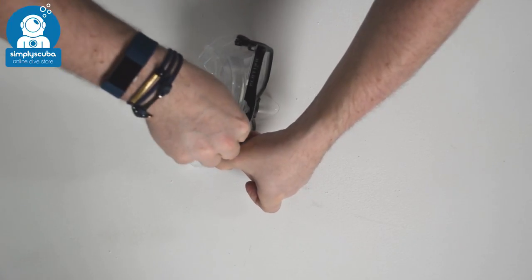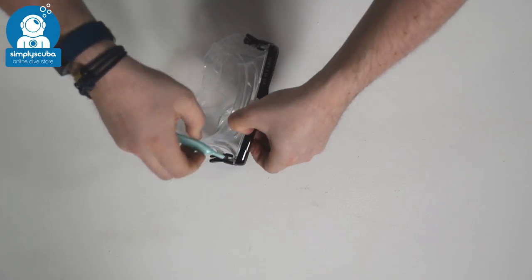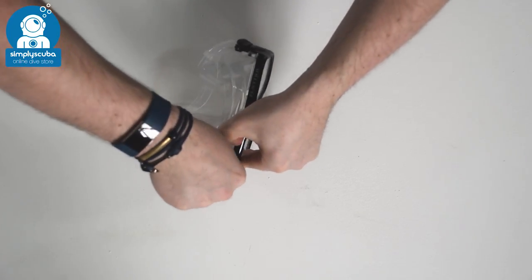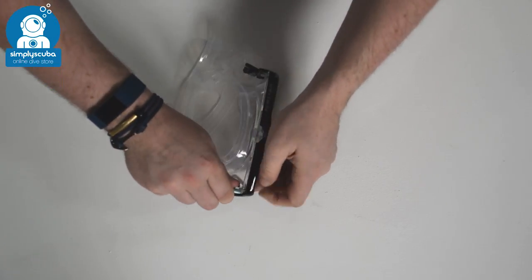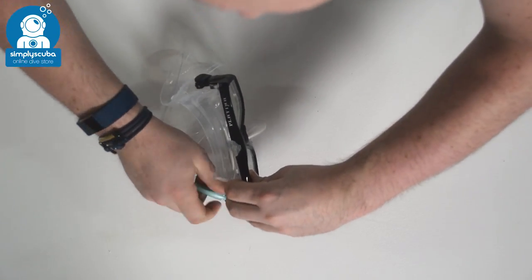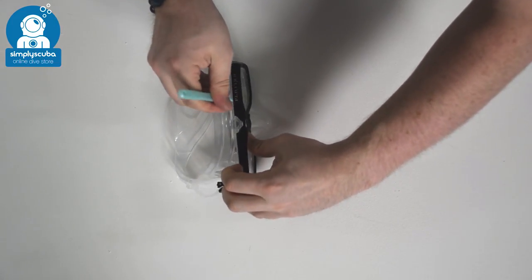Then you need to slowly work your way around the lens just to remove it. Often they clip back into position when you're first starting off, so it takes a bit of effort to get this mask apart, and then after you've undone one you just move your way across to the next.